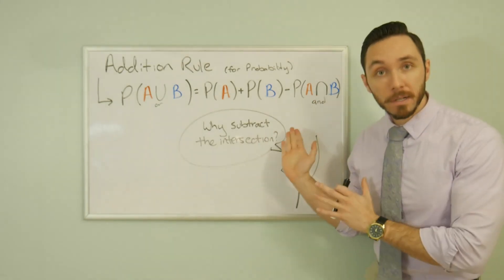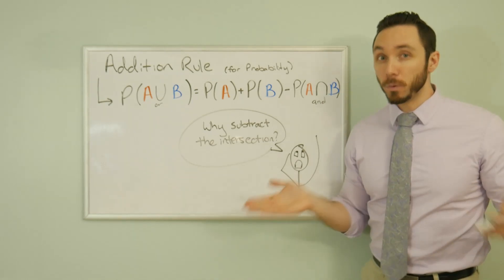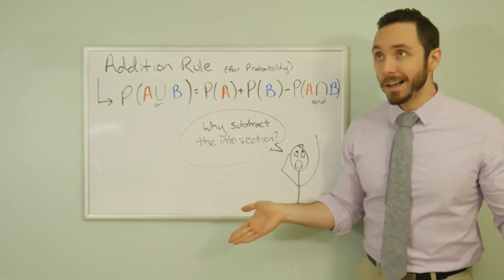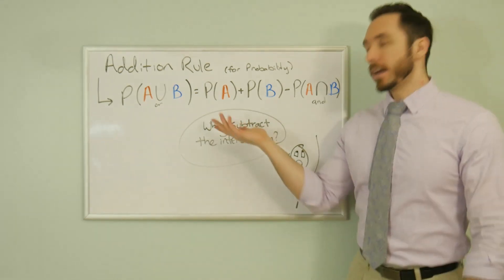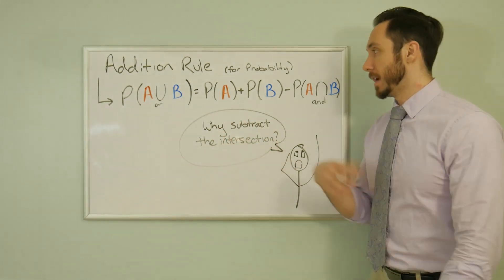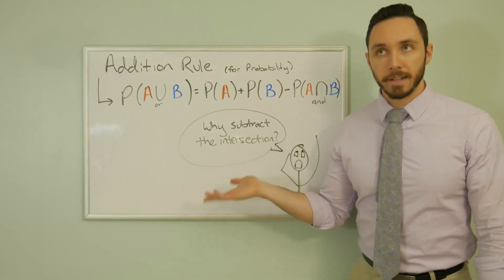Why? Why do we subtract off the intersection? That's weird. A lot of kids get confused at this part of the game. It's very common for people to just say, well, you just add up the probability of liking apples, you add up the probability of liking bananas, and that's it. That should get you just the probability of liking apples or bananas.